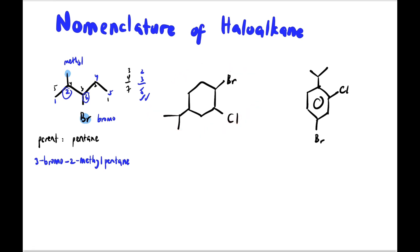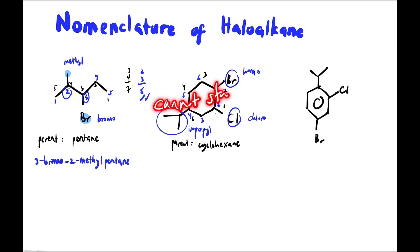The next compound has cyclohexane as the parent. We have bromo, chloro, and isopropyl as substituents. When numbering, we don't place isopropyl on carbon 1 because it would make the locants larger. For the black numbering: 1 plus 2 plus 5 equals 8. For blue numbering: 1 plus 2 plus 4 equals 7. We choose blue, so the full name is 1-bromo-2-chloro-4-methylcyclohexane.